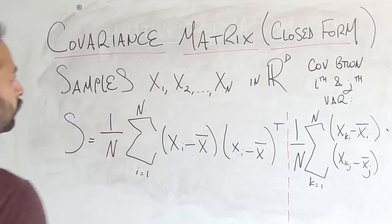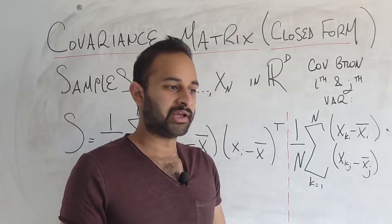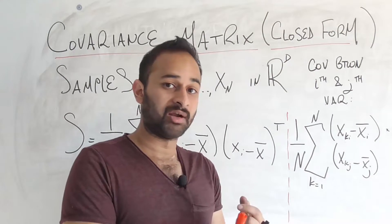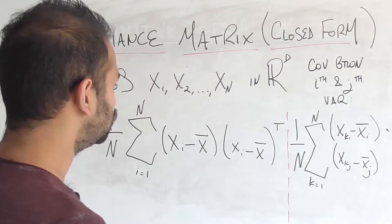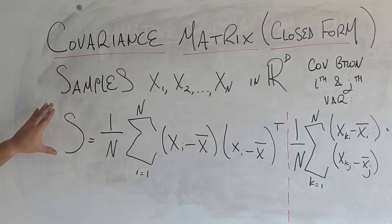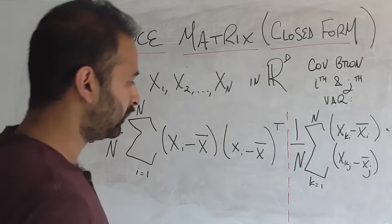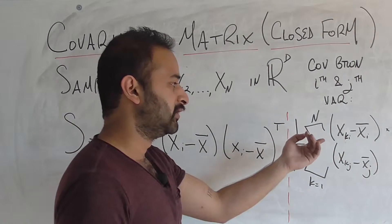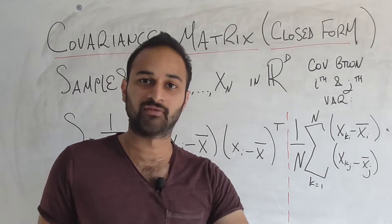So the covariance matrix, remember, is a kind of tabulation of the covariance between any variable and any other variable in your given situation. How we're going to do this video is we're going to give the answer to the closed form, and then we're going to verify that this answer is correct by comparing it with the actual covariance between the ith and the jth variable.